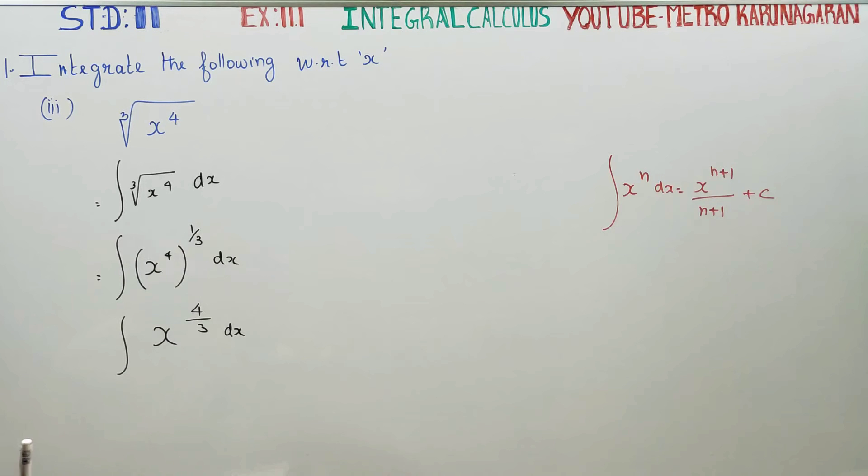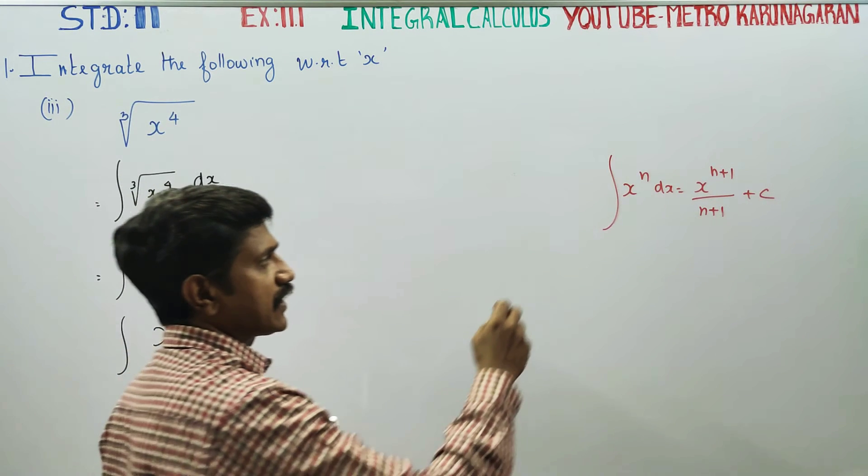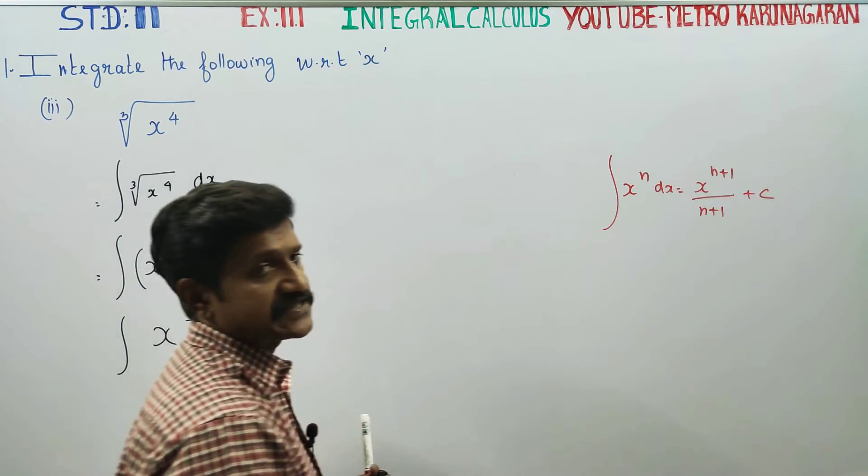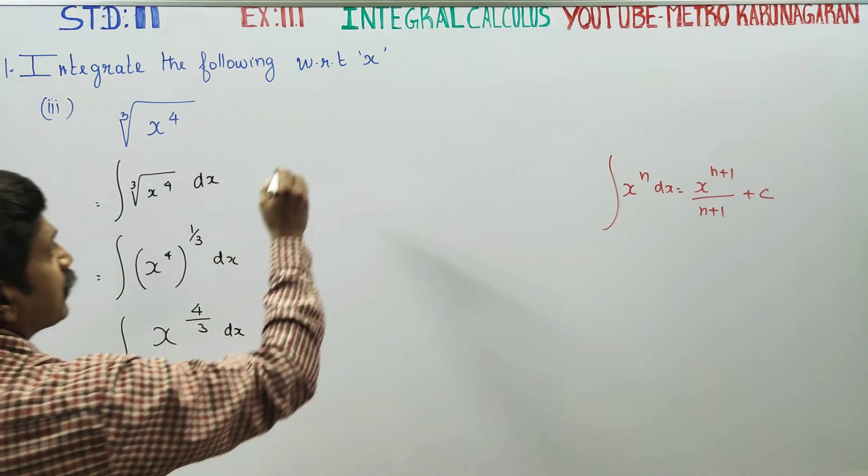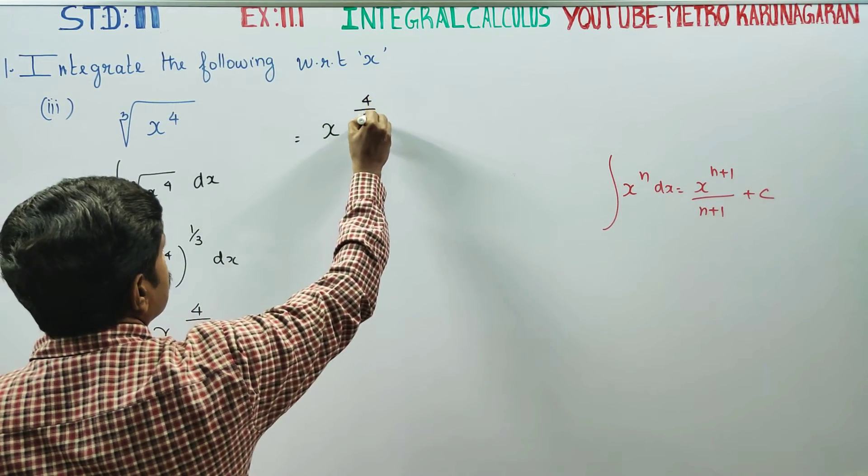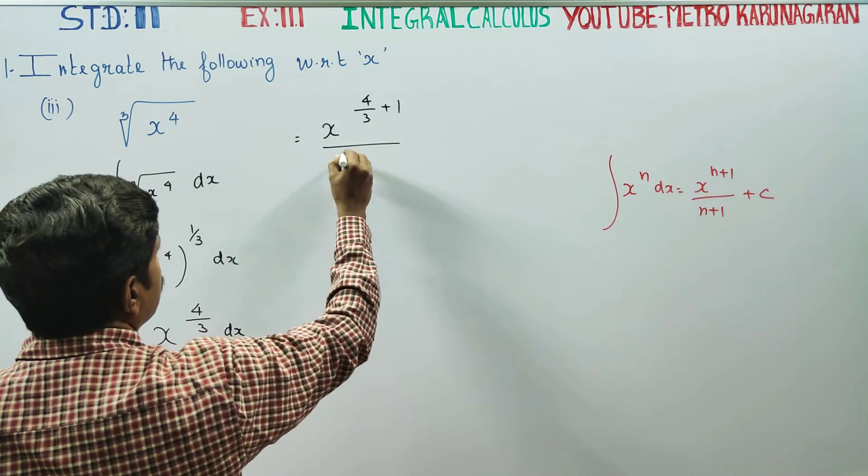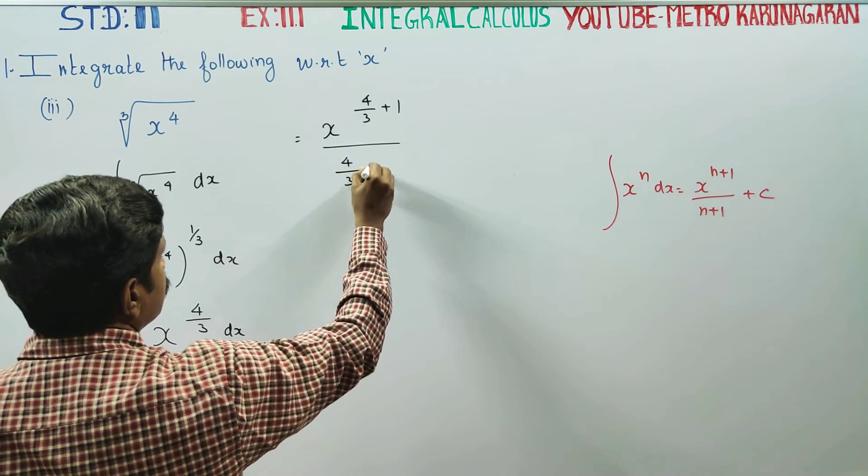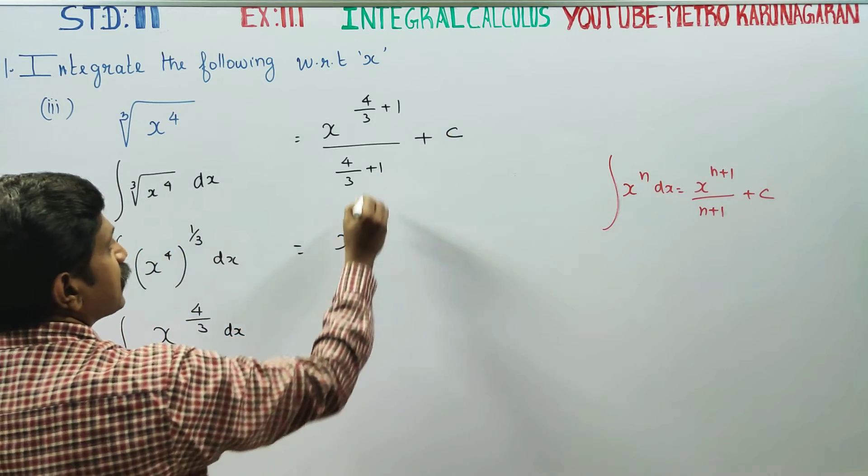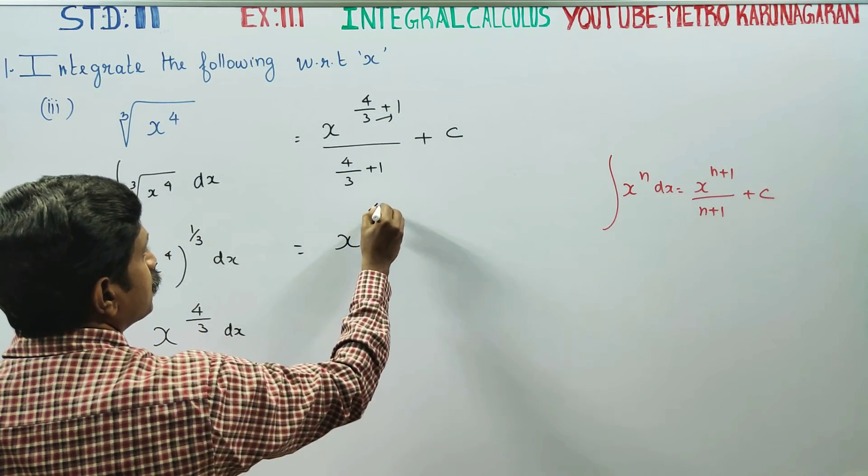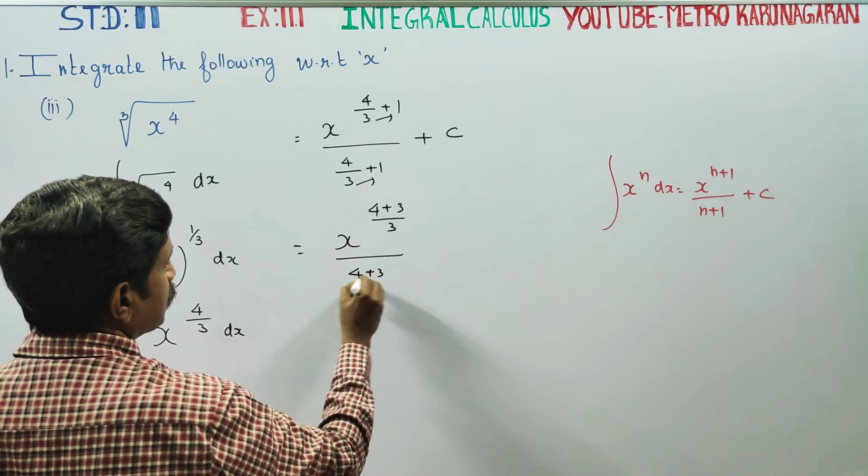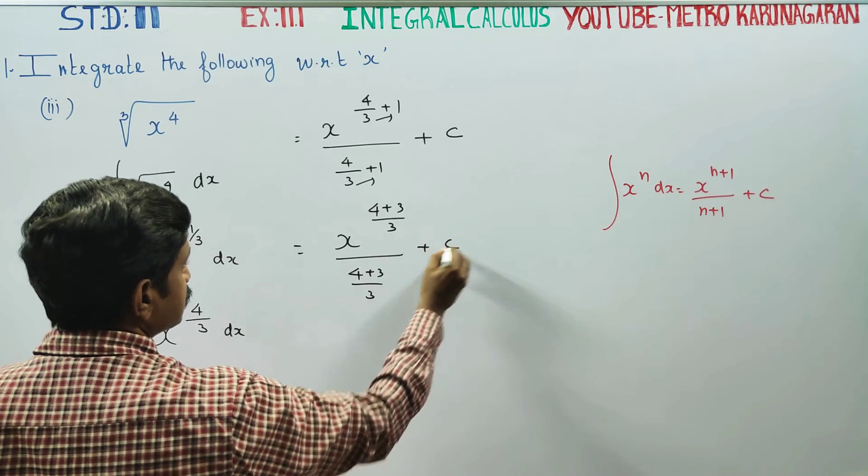If you are going to integrate this x power, x power 4 by 3 plus 1 by 4 by 3 plus 1 plus integration constant c. If you take LCM, you will be getting 4 plus 3 by 3 by 4 plus 3 by 3 plus c.